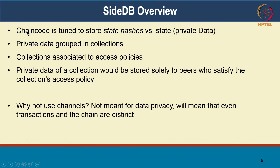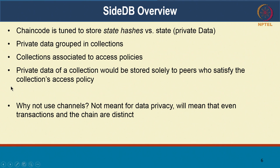The chaincode is going to store both public data and private data. The private data will only be with authorized entities; only the hash of the private data gets onto the transaction. The private data can be grouped into collections. Collections is a notion where I can say collection A has these 3 peers, collection B has these 5 peers. I can create those collections and have data within them. If a particular data element is in a collection, that data element will only be seen by participants of the collection. Just like channels, it is also possible for the membership of collections to change over time. Collections are associated with access policies — you can define who can read the data and who can write data for each collection.